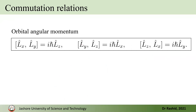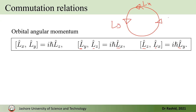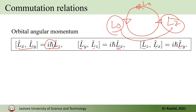If you compute the other commutators, you find [Ly, Lz] = iħ·Lx and [Lz, Lx] = iħ·Ly. These follow the same cyclic order — starting with Lx and Ly gives Lz, starting with Ly and Lz gives Lx, and starting with Lz and Lx gives Ly — always multiplied by iħ.